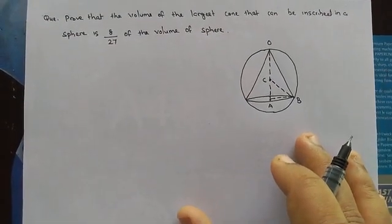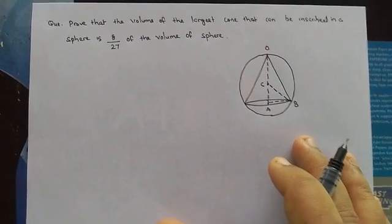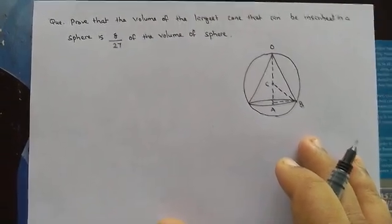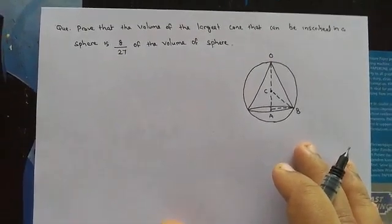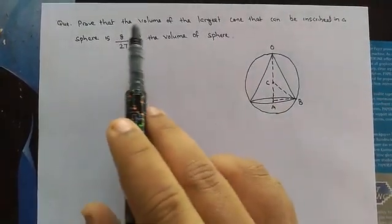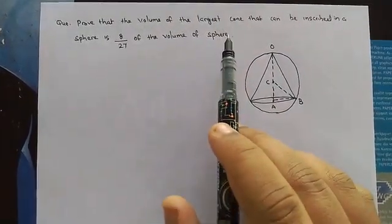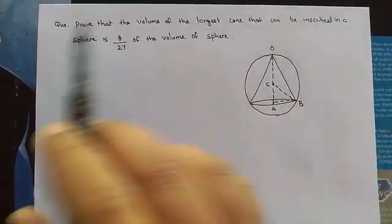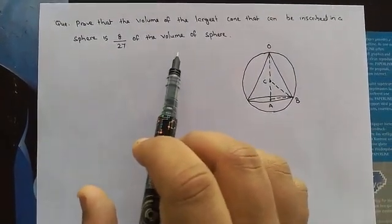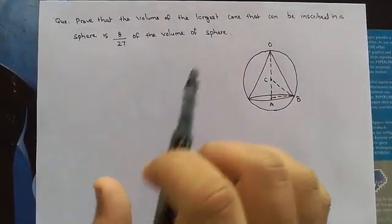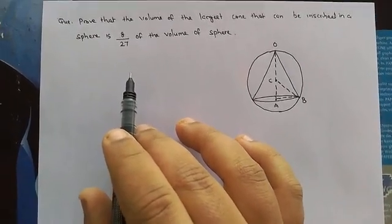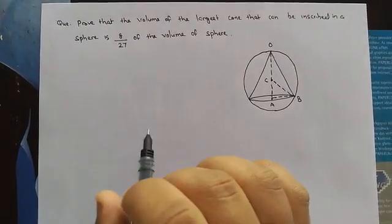Hello friends, good morning to all. This is Master Academy. Today we are going to prove that the volume of the largest cone that can be inscribed in a sphere is 8 by 27 of the volume of the sphere. It is one of the applications of maxima and minima problems.